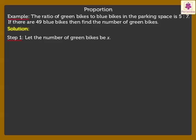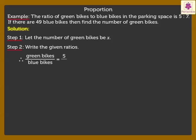To do this we need to follow three simple steps. Step 1: Let the number of green bikes be x. Step 2: Write the given ratios. Therefore, green bikes upon blue bikes is equal to 5 upon 7 which is equal to x upon 49. Step 3: Find the missing number by cross-multiplying.